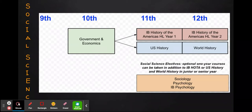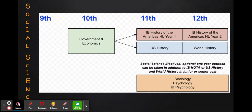On the bottom you'll see some social science electives. These are optional one-year courses that students can choose to take in the junior or senior year, along with either IB History of the Americas or U.S. History and World History.